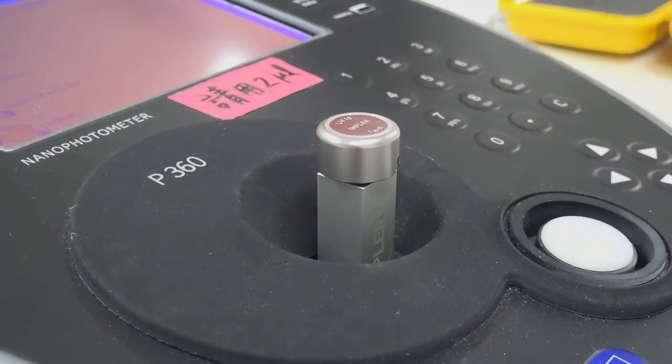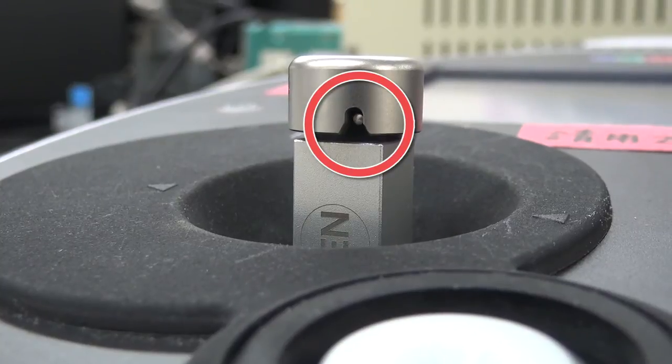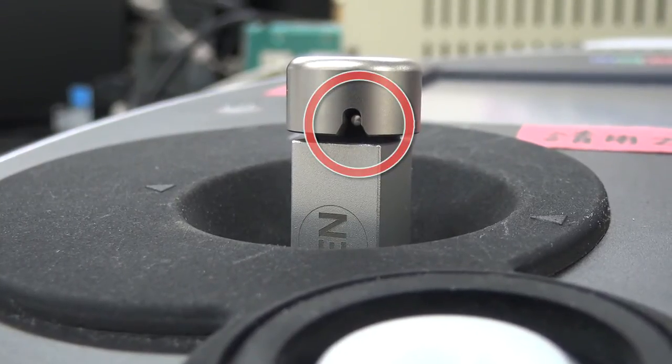7. Put the lid on. Make sure the notch of the lid perfectly sits on the metal bar to form a closed space.